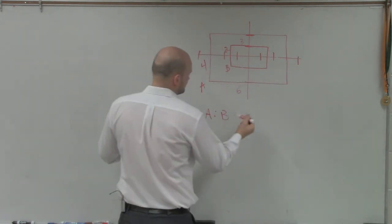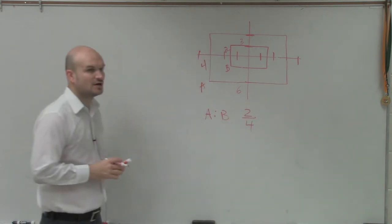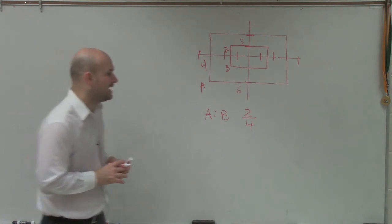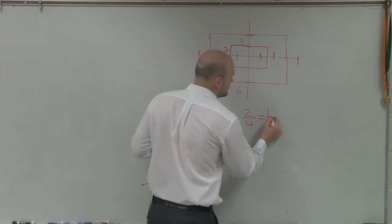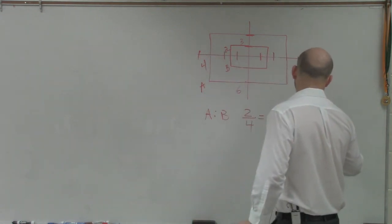So to go from A to B, I'll reduce this. I'll just rewrite it as B over A, which reduces down to 1 half.